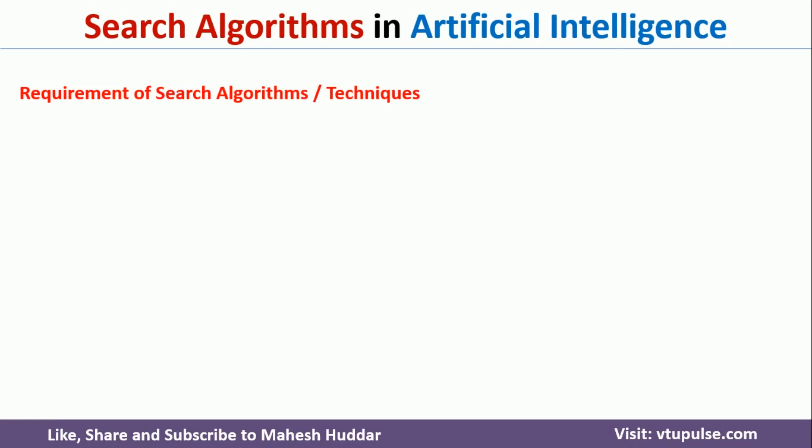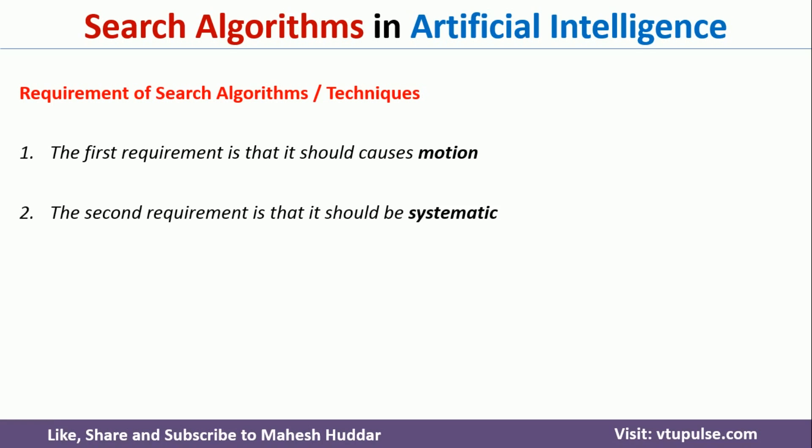Before we understand the different search algorithms, first we will try to understand the requirements to be satisfied by a search algorithm. There are mainly two requirements a search algorithm should satisfy. The first one is it should cause a motion — that is, whenever you apply an algorithm, we should be able to move from one state to another state. The second one is the algorithm should be systematic — that is, it should have a step-by-step approach so that we can move from the source state to the goal state.